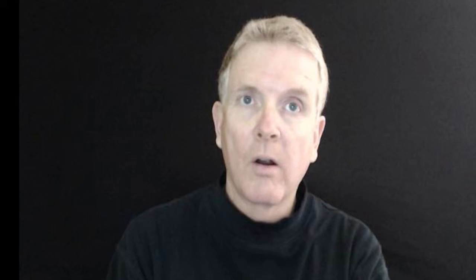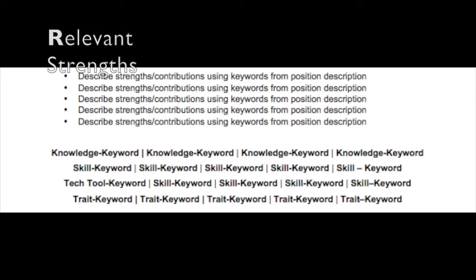The first letter R in the CAREER model stands for relevant strengths. This is a summary of qualifications for a very specific position that you're applying for. This may include a mix of paragraph, bullet, and list formats.